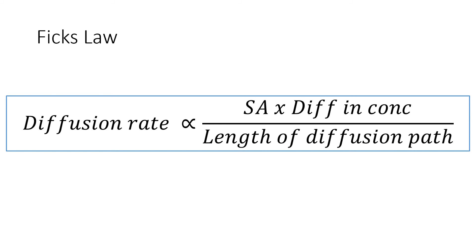Throughout this entire unit, Fick's Law will come up. Diffusion rate is proportional to three things: the surface area being diffused across, the difference in concentration either side of that surface, and it is inversely proportional to the length of the diffusion pathway. The smaller the diffusion pathway, the faster the rate of diffusion. Increasing the surface area or the concentration difference will also increase the diffusion rate.